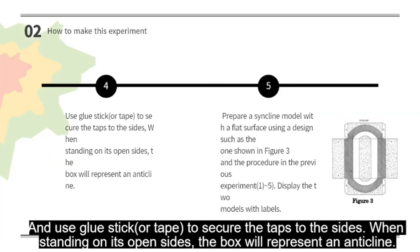And use adhesive tape or glue stick to secure the tabs to the sides. When standing on its open sides, the box will represent an anticline.